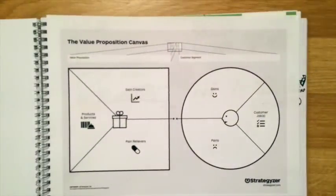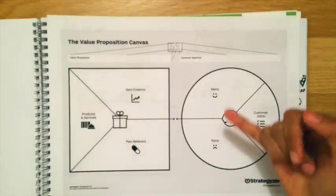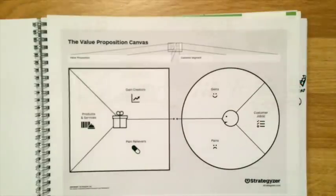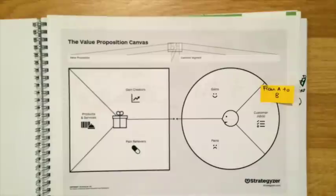On the right side of the value proposition canvas, I'm going to sketch my customer profile. This side of the canvas focuses on the customer's jobs to be done, their pains, and their gains. In terms of jobs to be done, which are the needs that the customer is experiencing,